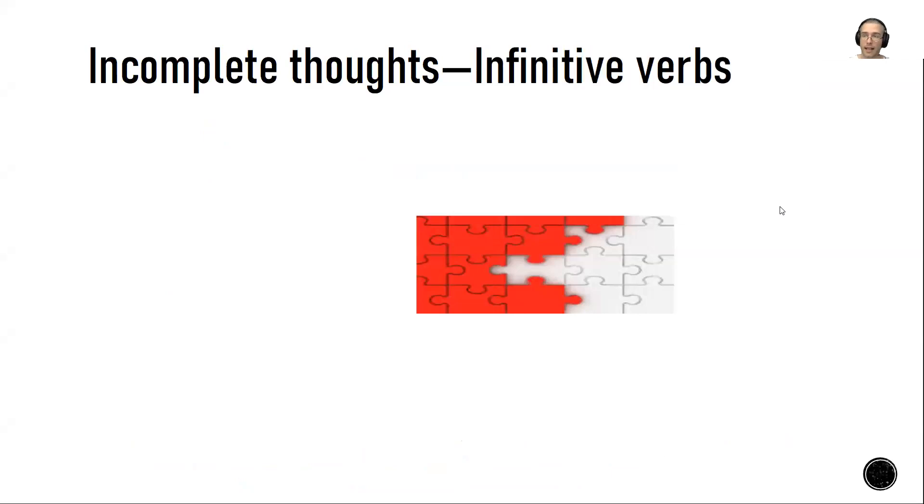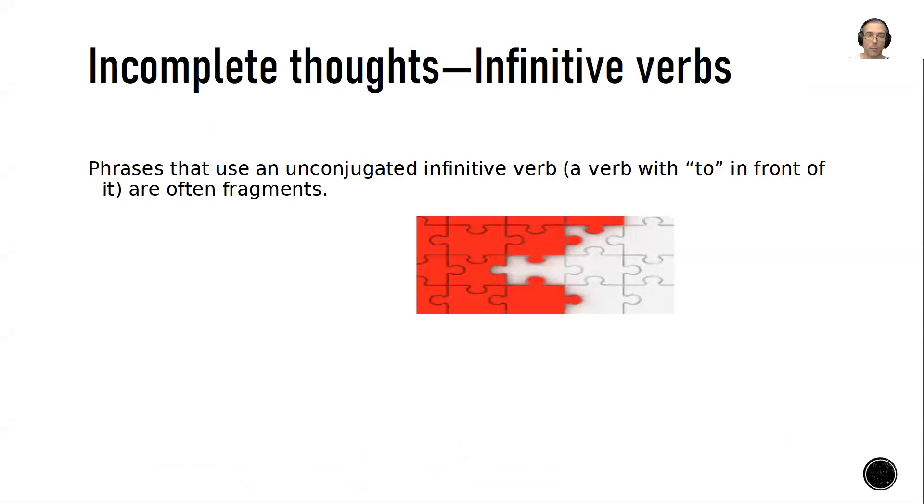Another way that you can create a sentence that is not actually a sentence, it's a sentence fragment, would be when you have infinitive verbs in the sentence as opposed to a properly conjugated main verb. Phrases that use an unconjugated infinitive verb, that is, a verb with TO in front of it, so TO and the base form of the verb, are oftentimes fragments.